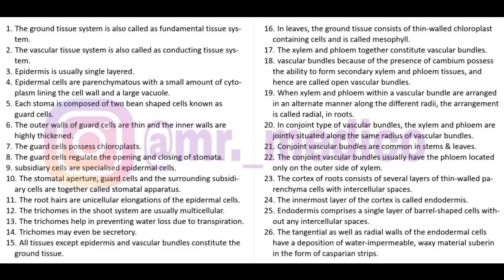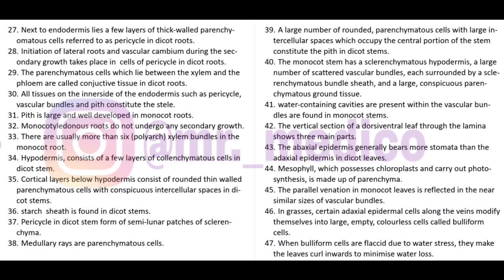This water-impermeable waxy material is suberin, found in the form of Casparian strips. Next to endodermis lies a few-layered thick parenchymatous region called pericycle in dicot roots. Pericycle is thick-walled and parenchymatous. Initiation of lateral roots and vascular cambium during secondary growth takes place in the cells of pericycle in dicot root.